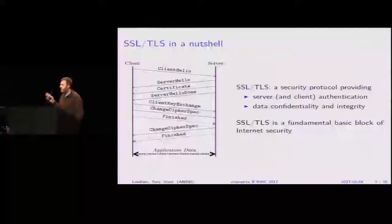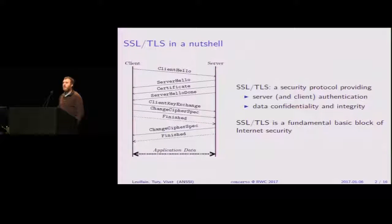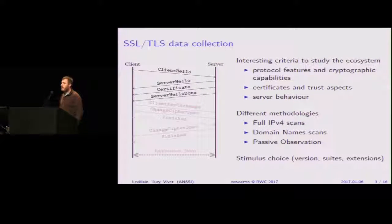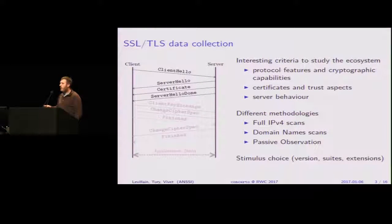Here is the standard schema to show you what SSL/TLS is. You already know that it's a protocol that aims at providing server authentication, optional client authentication, and data confidentiality and integrity. We are going to look specifically at the first messages of the protocol: the client hello, where the client initiates the connection and proposes the different cryptographic features it supports, and then the server hello, where the choices are made — which cipher, which version — and where the server presents itself with certificate chains in a message called certificate.